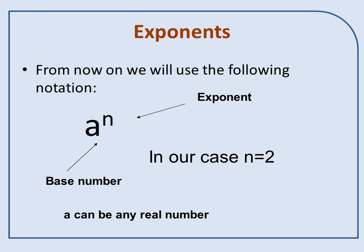In that case, n equals 2. And a can be any real number except zero. Actually, it could be equal to zero. Zero raised to any power is zero.